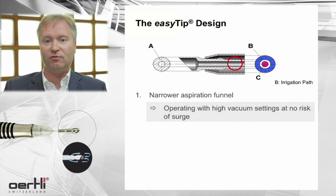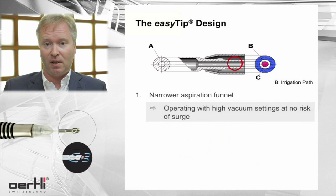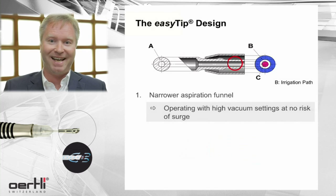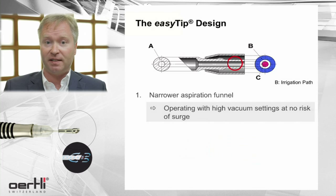You do not have to be afraid of surge at all. On the other hand, if you do have a narrower aspiration funnel, active aspiration is not affected by this, so you can apply very high vacuum settings.